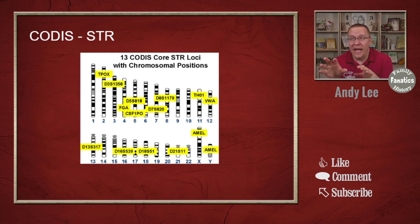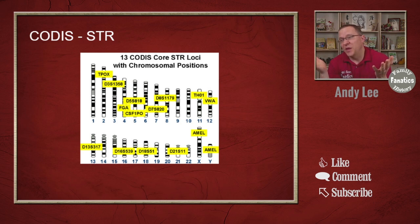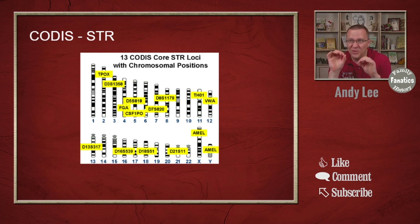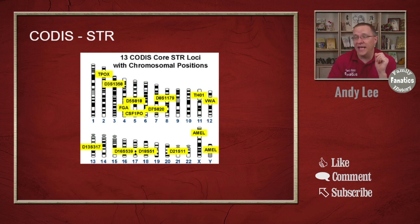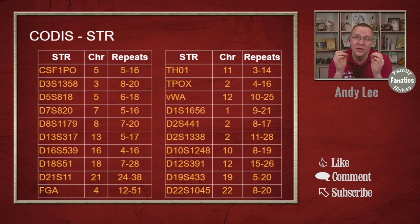These STRs are all throughout our genome. You can see here where they're mapped out on chromosomes 1 through 21 — they didn't have one on 22 or 20 initially. Some chromosomes have multiple STRs on them that are used, others don't have any. This is the current list that the FBI uses for the CODIS STR database.